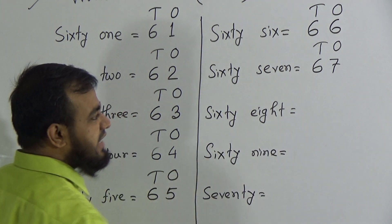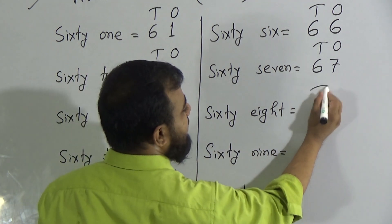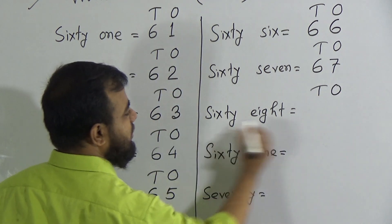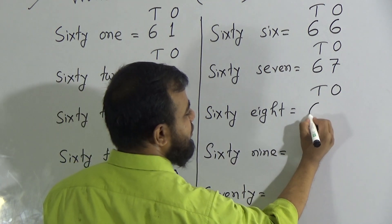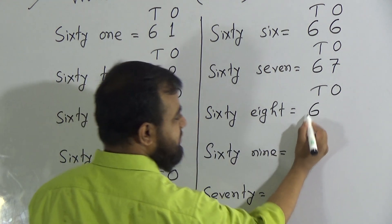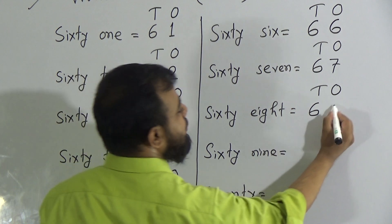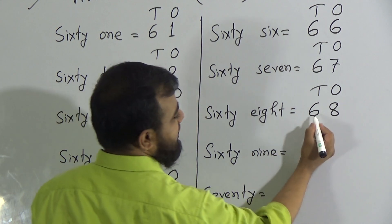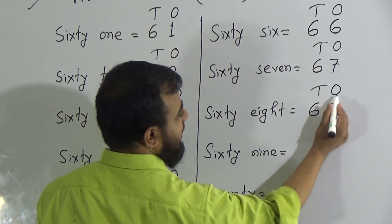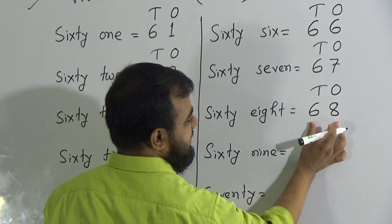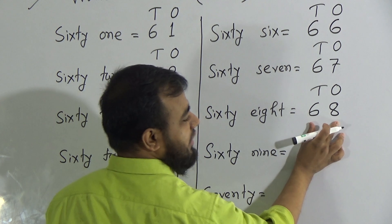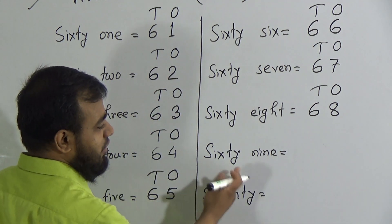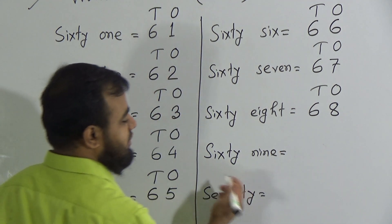Next number is 68. Like before, tens and ones. To write 60, we write 6 in the tens place. To write 8, we write 8 in the ones place. It makes six tens and eight ones — 68. Or you can say six and eight makes the number 68. We have two remaining numbers.